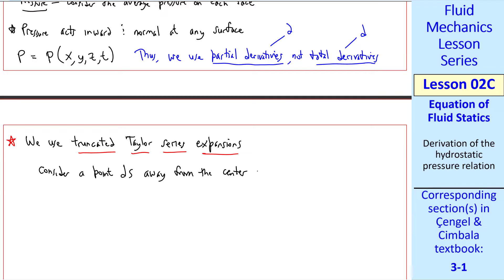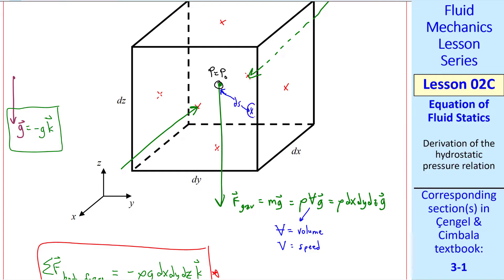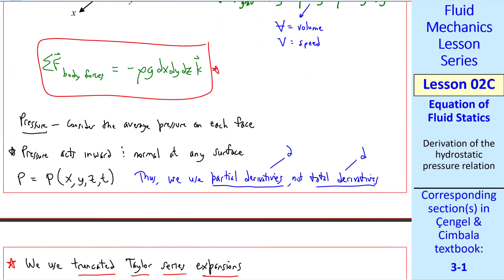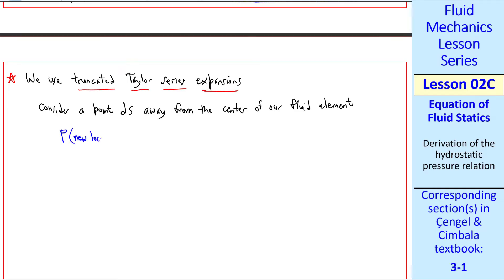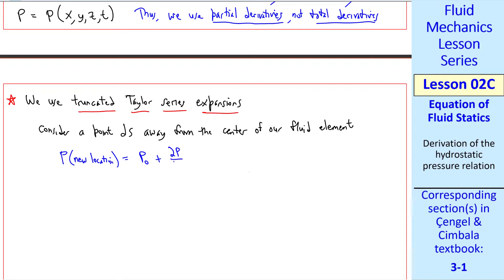Consider a point ds away from the center of our fluid element. ds can be in any direction. So if we're considering the point here, we use a Taylor series expansion as follows. p at this new location is equal to the pressure at the center plus del p del s ds plus, if you remember Taylor series expansions, 1 over 2 factorial, del squared p del s squared times ds squared plus higher order terms. Since ds goes to zero, this term is much smaller than this term. So we'll ignore higher order terms. This is now a truncated Taylor series expansion.